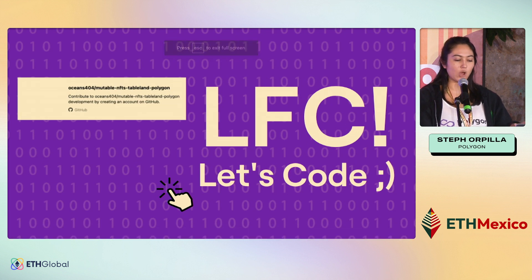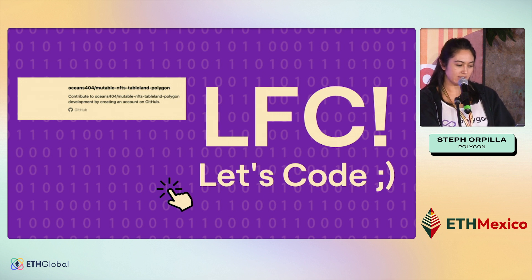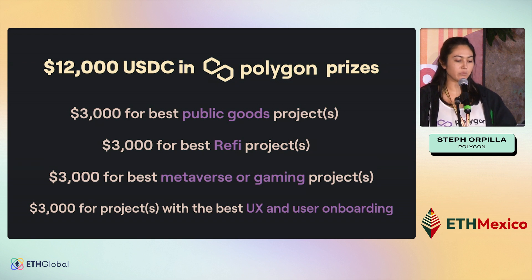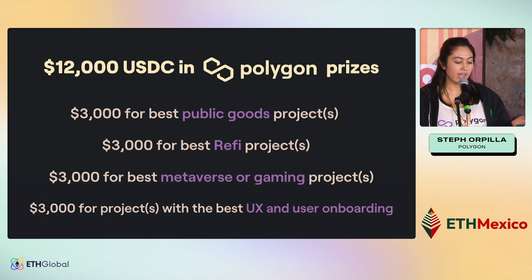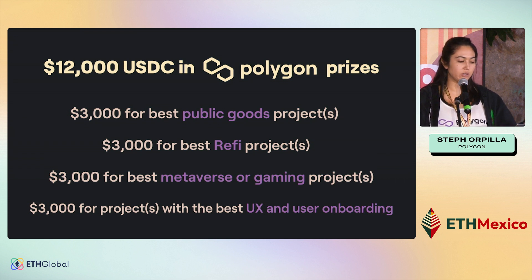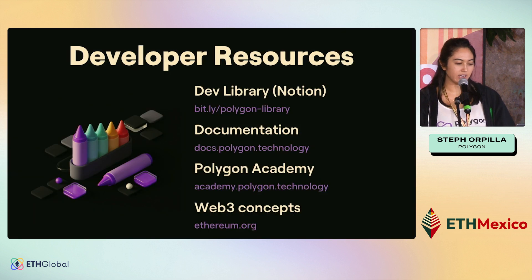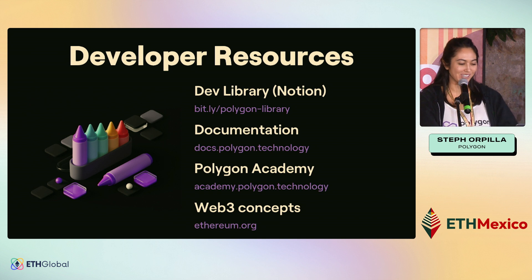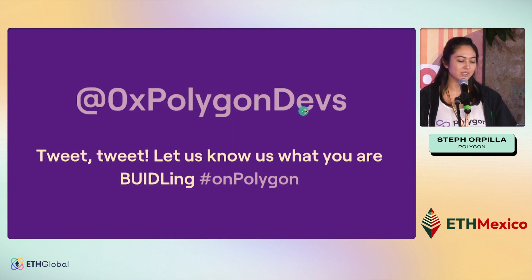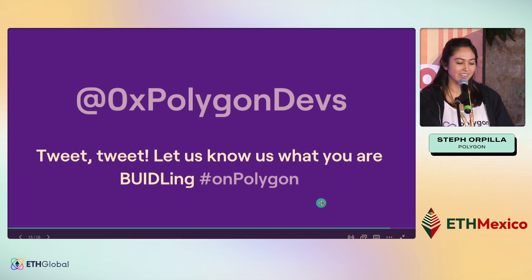Check out that repo — I hope it's relatively easy for you all to change values and create some mutable NFTs this weekend. I just wanted to go over the Polygon prizes one more time. We have four different prize categories: public goods, ReFi (which is regenerative finance), metaverse or gaming, and the best UX or user onboarding experience to your DApp. We'll probably give away two to three prizes in each of these categories. Here are some developer resources — they're also all online, so you should be able to find everything.